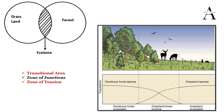Ecotone is also known as a zone of tension because it has conditions intermediate to adjacent ecosystems. It contains organisms that are entirely different from those in the adjoining communities. The ecotone will have species from both grassland and forest, but in between there will also be other organisms that can adapt to this ecosystem and may not be available in either grassland or forest alone — that's why it is a zone of tension, with species competing for resources.